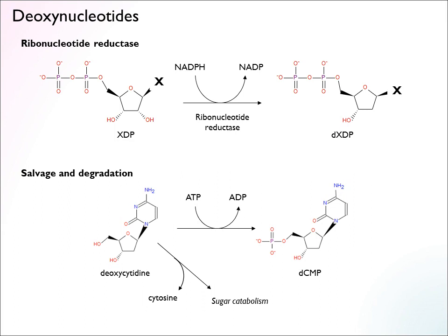There are also salvage pathways for deoxynucleotides. If you find the deoxy nucleosides — the deoxy form with the nucleobase but without the phosphate, which tends to crop up if DNA has been degraded — these can be recaptured: you just add on the phosphate group with a kinase, and you get the deoxynucleotide back to be used again. That's energetically efficient, like the other salvage pathways. It is also possible to degrade deoxynucleotides — the nucleobase is cleaved off first and can be used for either RNA or DNA. The deoxyribose sugar has a dedicated catabolic pathway where it can be fed back into central metabolism. So that's pretty much everything about deoxynucleotides and nucleotide metabolism.